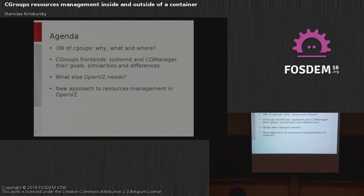systemd actually allows you a little bit more — you can subscribe and receive notifications about new cgroups appearing, which is useful when you want to distribute resources among cgroups from a pool. But the problem with systemd is that while it provides a D-Bus interface, you can only write to cgroups via D-Bus. When you want to read, you have to do it manually via the file system interface, which is not really clean or generic.